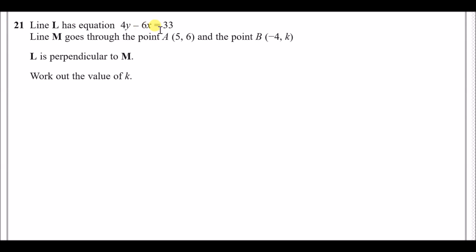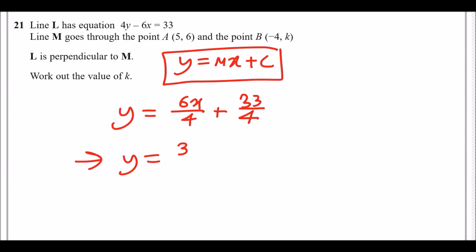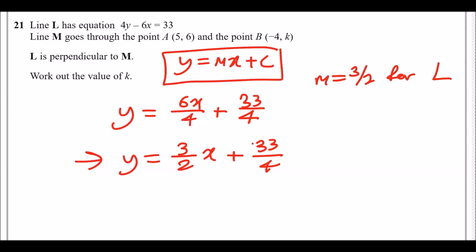Question 21: Line L has equation 4y minus 6x equals 33. Line M passes through two points and is perpendicular to line L. To check perpendicularity, rewrite both in y equals mx plus c form. Rearranging line L: add 6x across then divide by 4 to get y equals 3/2 x plus 33/4, so the gradient of L is 3/2.